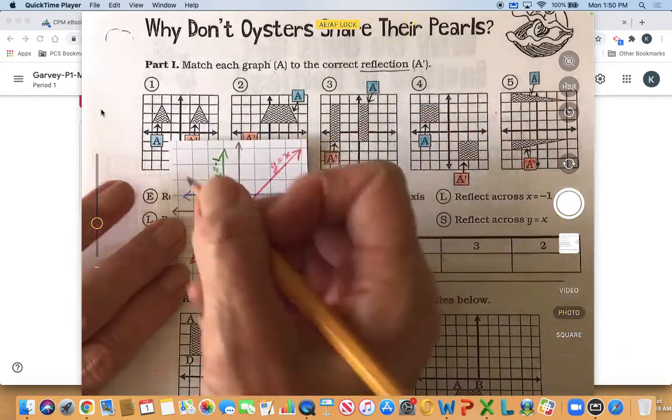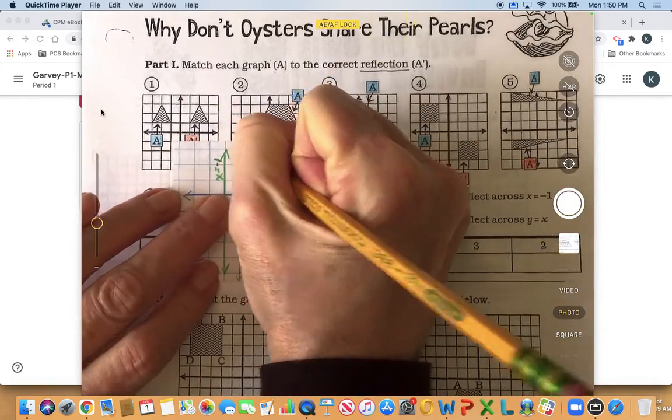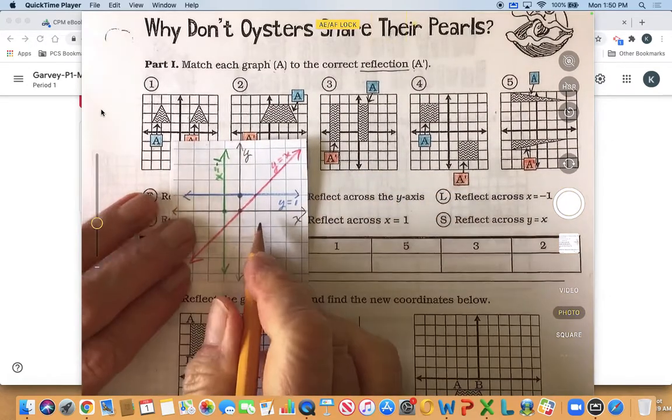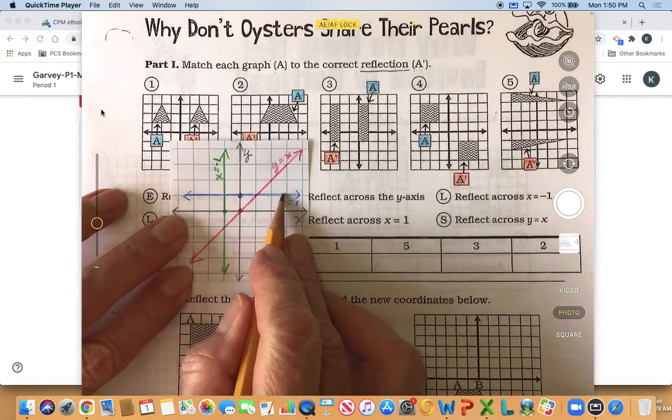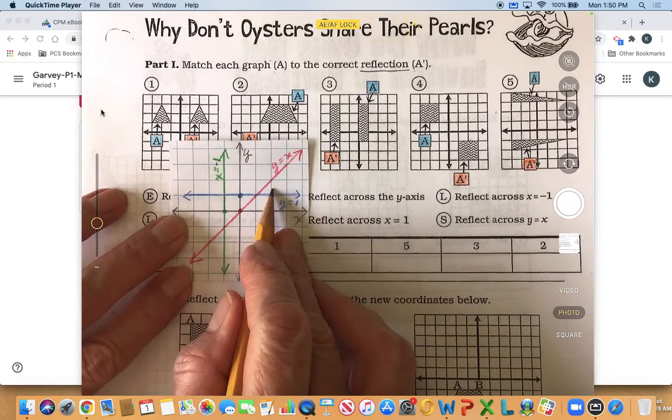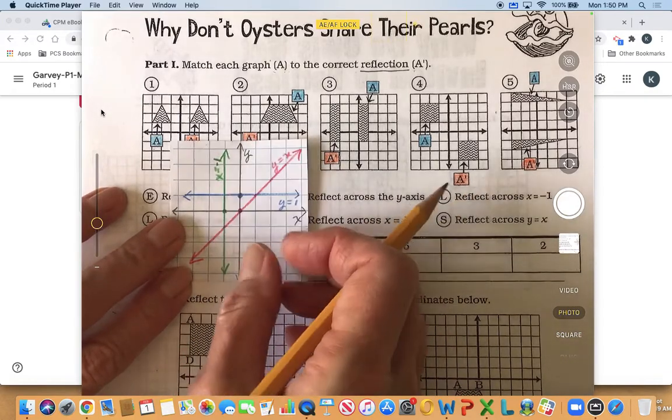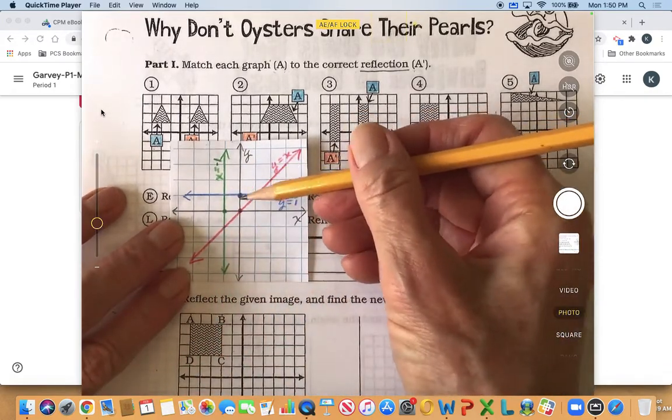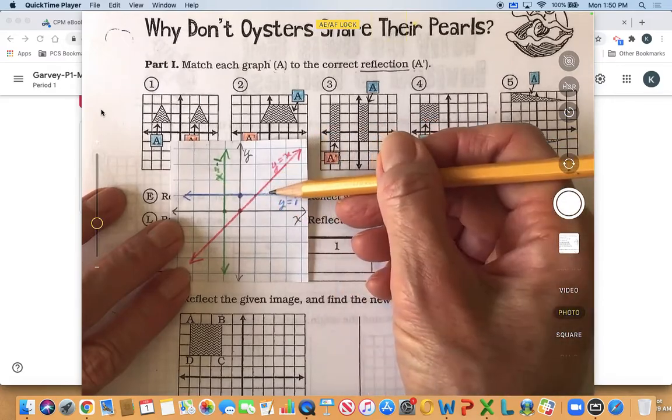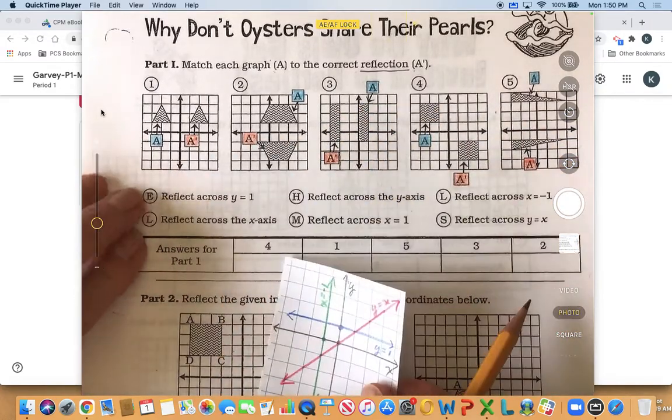So if it were on a set of coordinates x and y coordinates, y equals one, the line would be right here. So that's one possibility that something has been reflected across this line.